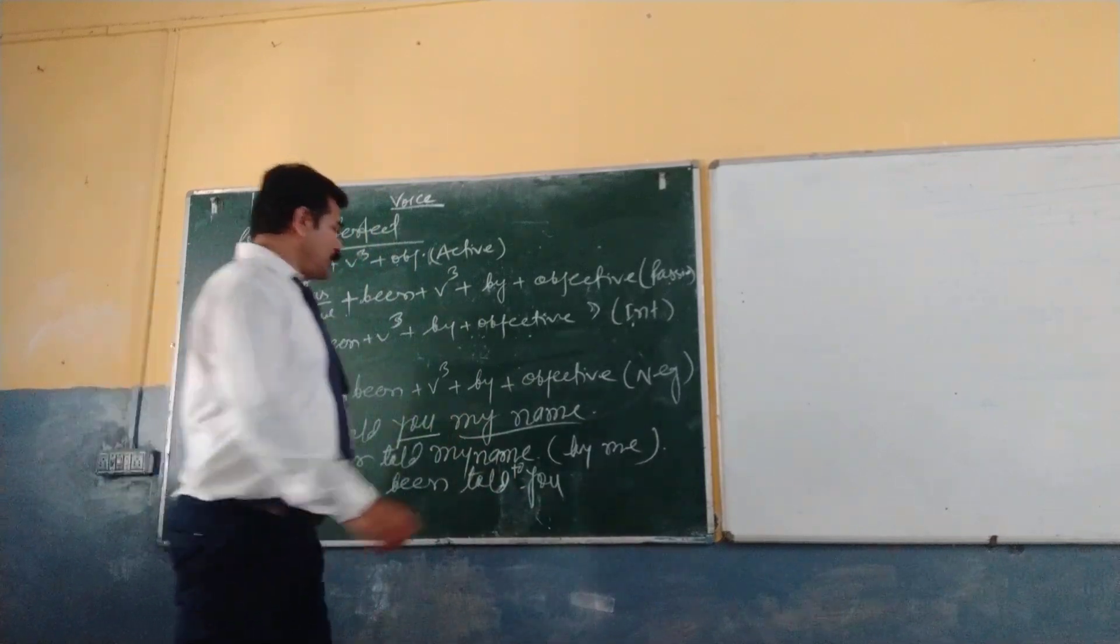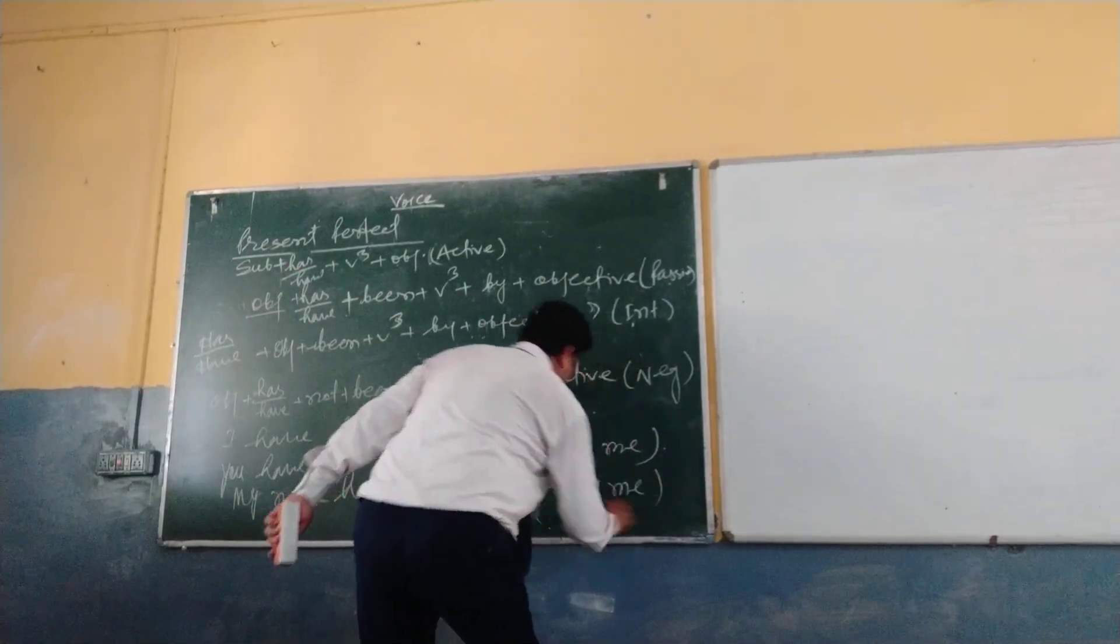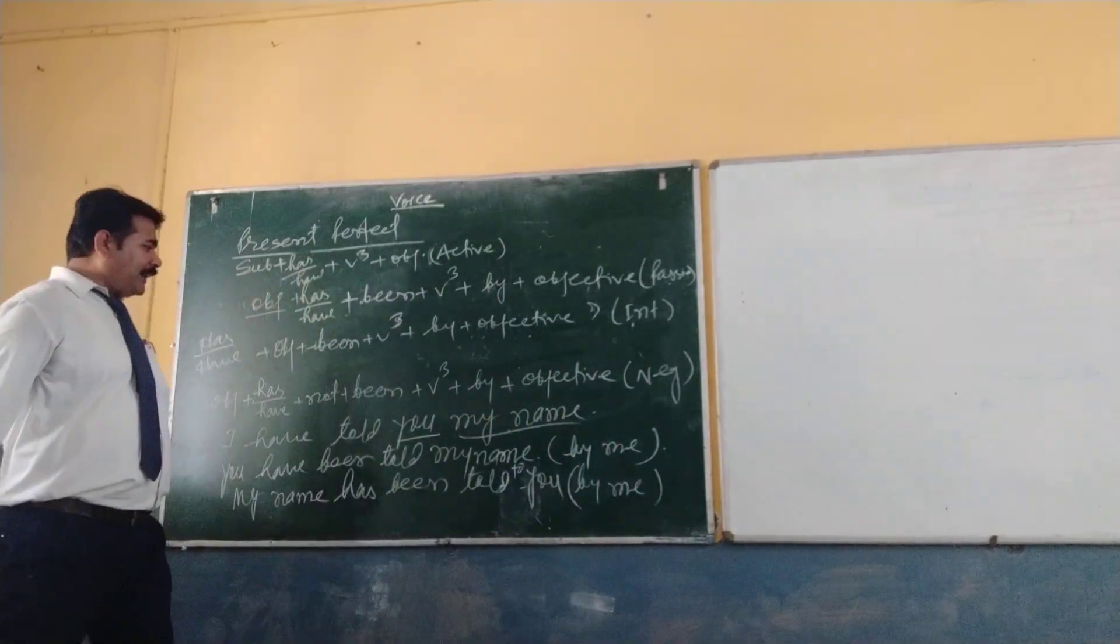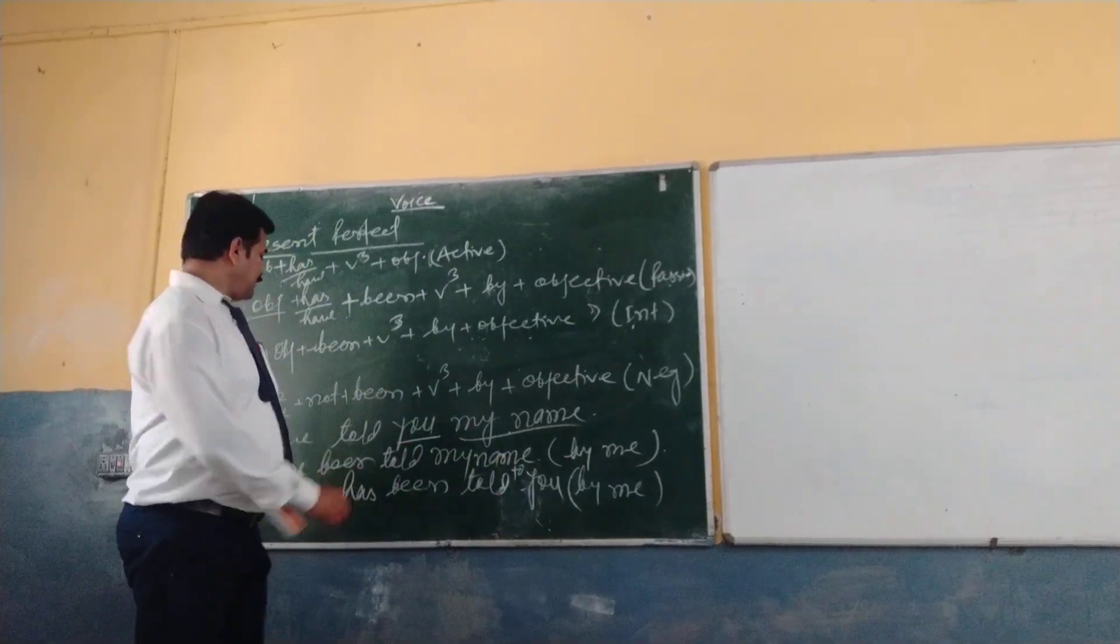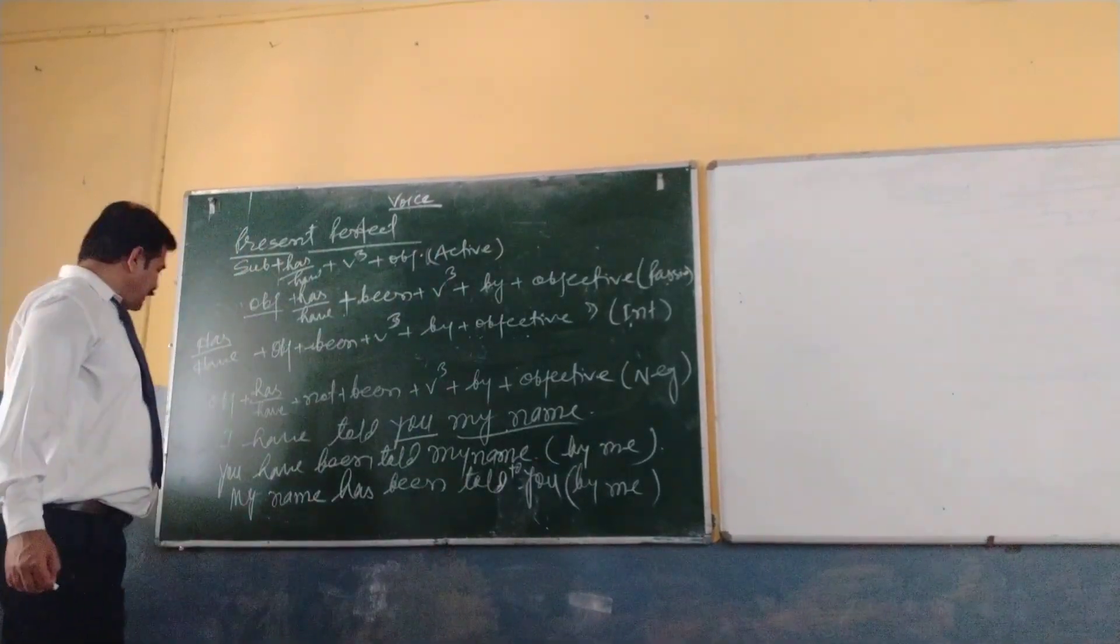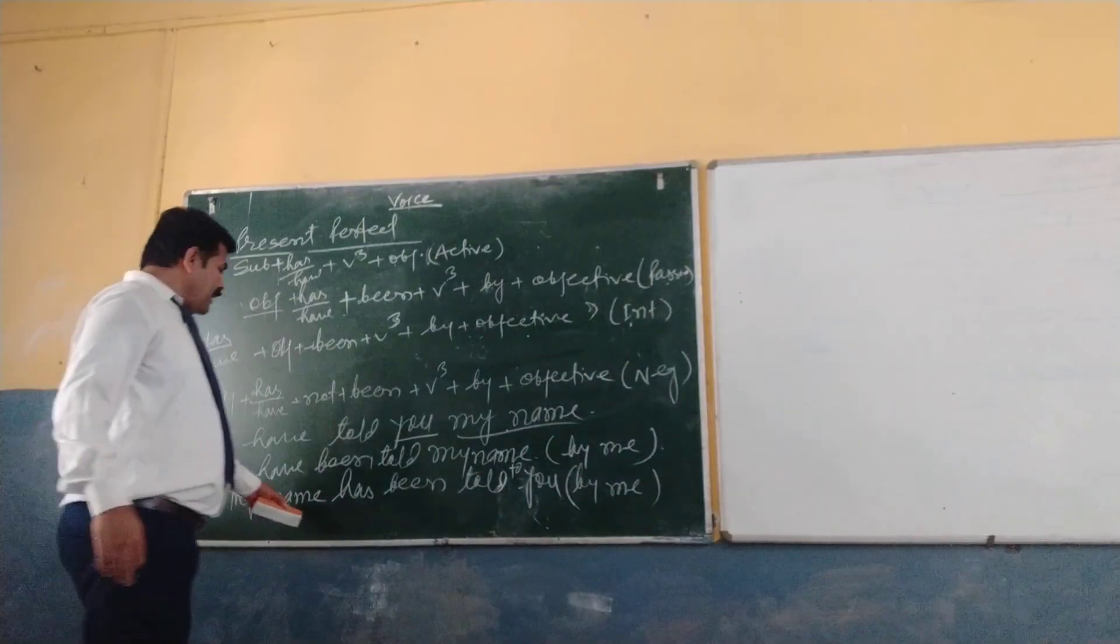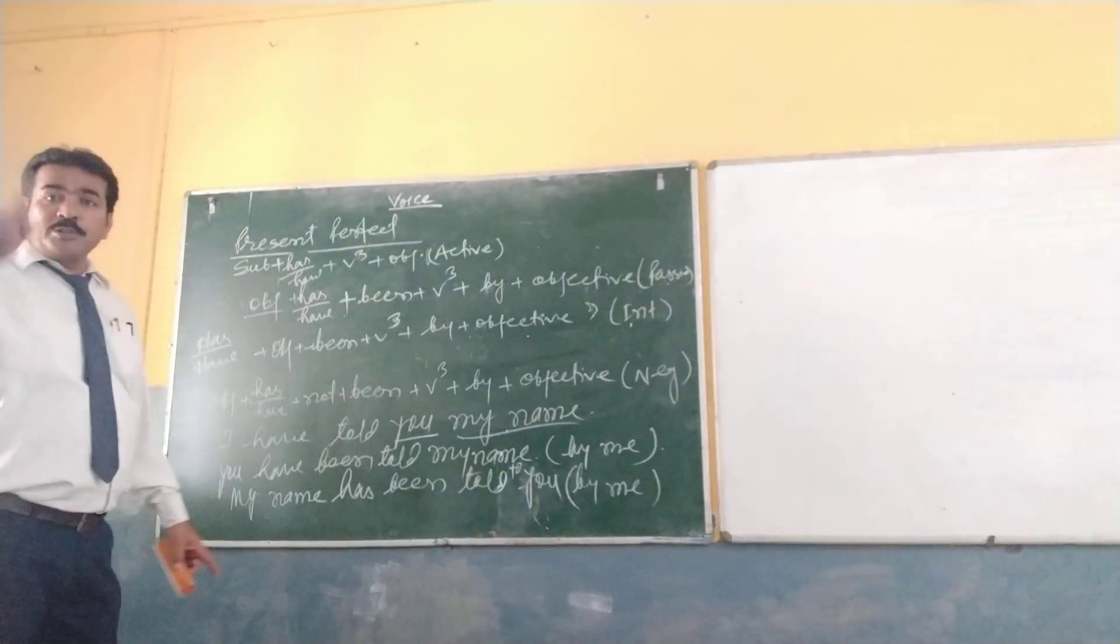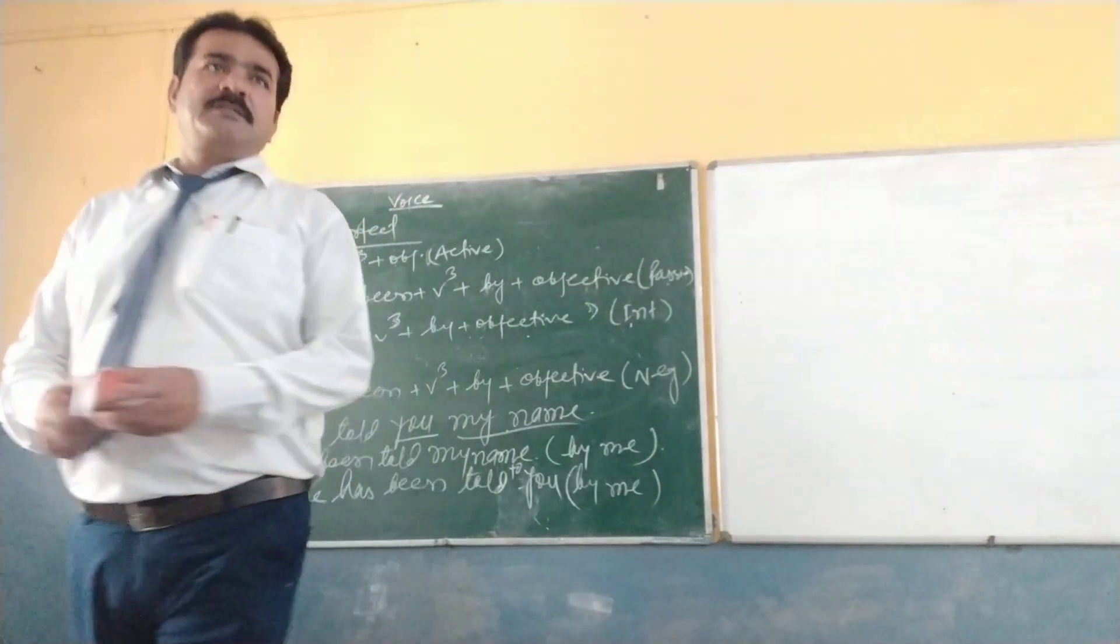My name has been told to you. So this is for here present perfect. Write it down.